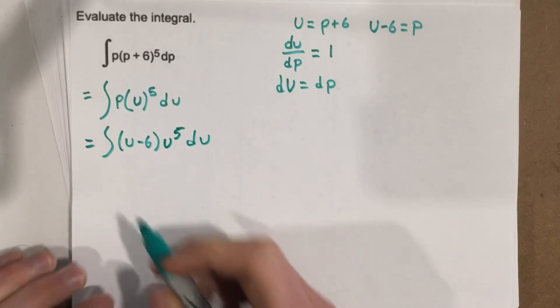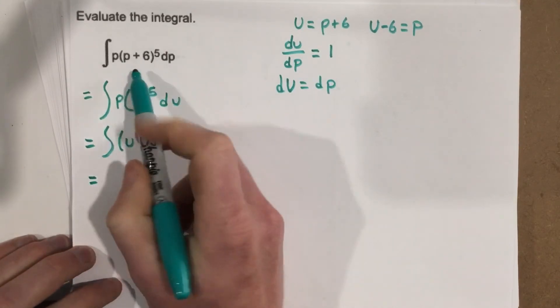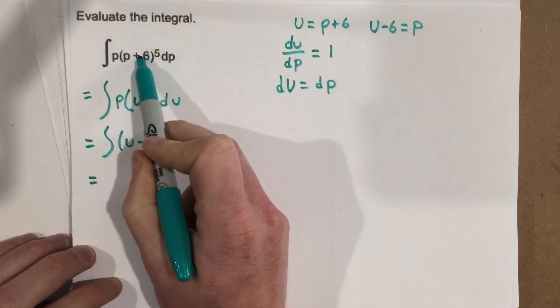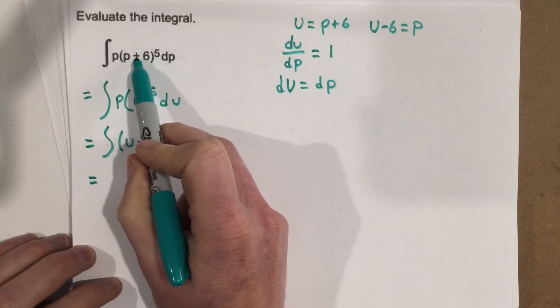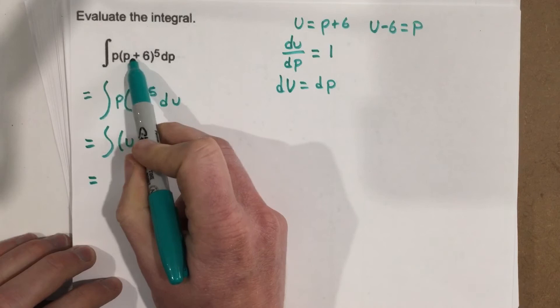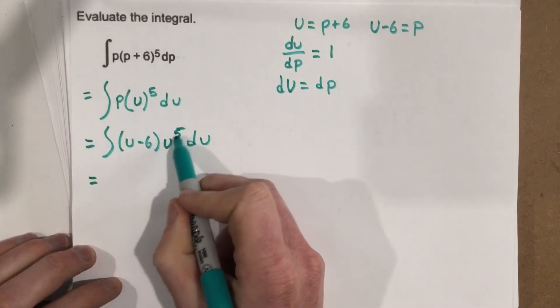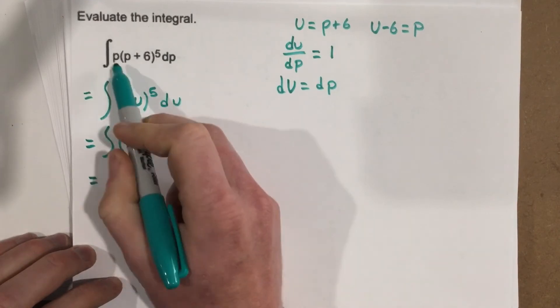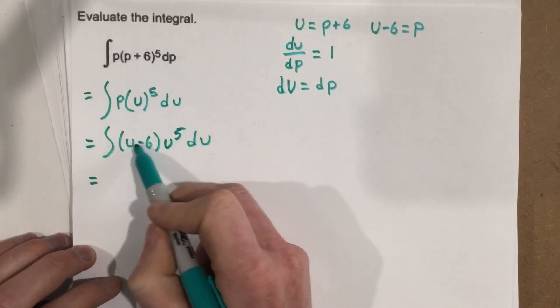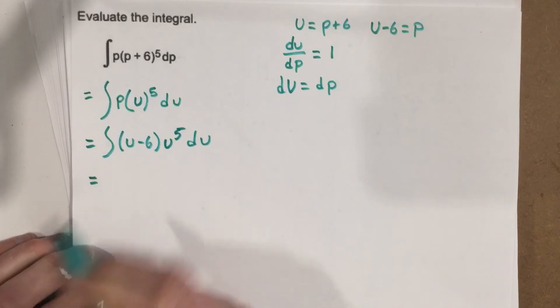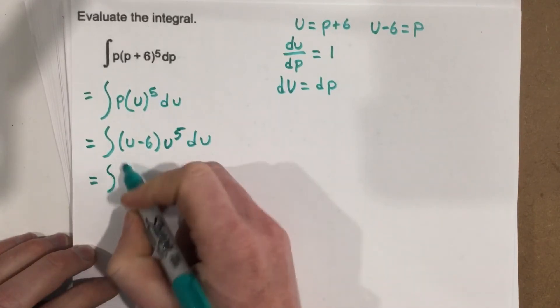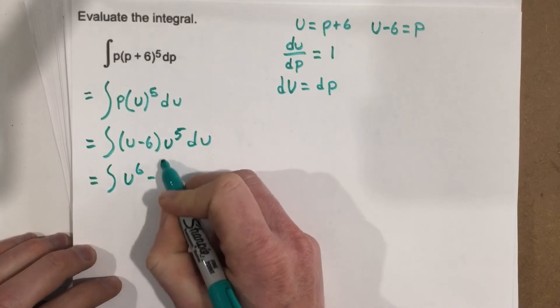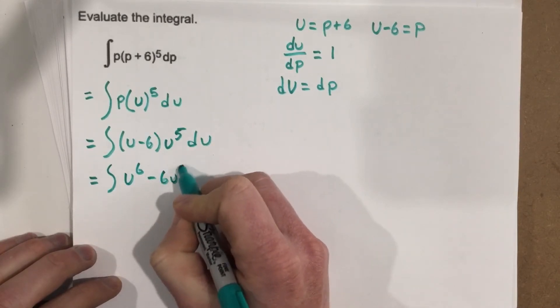Now you can see where this is going. This switched our inside expression from being two terms to now the inside expression with that exponent being one term, and vice versa, one term on the outside switched it here. So we can now distribute, and when we distribute, you'll see it's pretty convenient. u to the 6th minus 6u to the 5th, du.